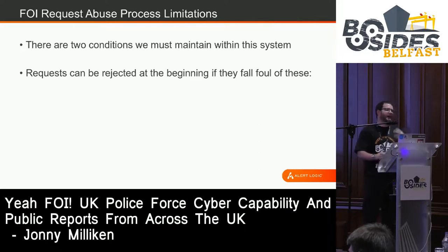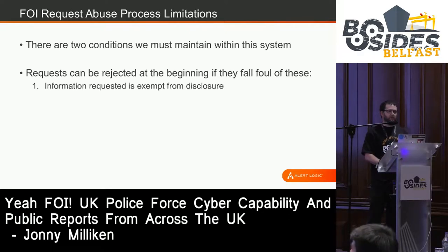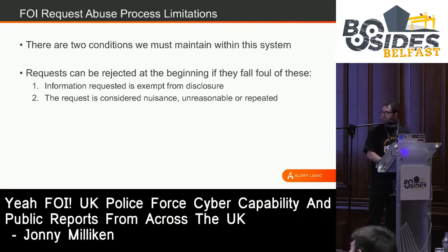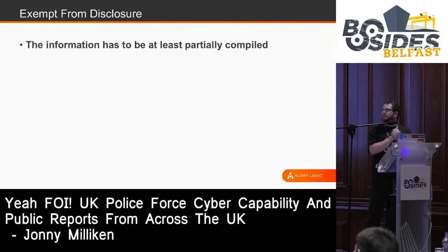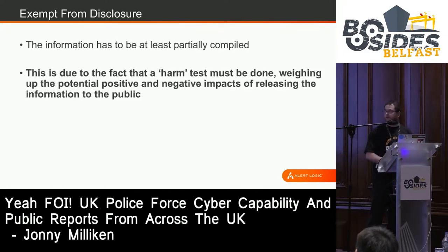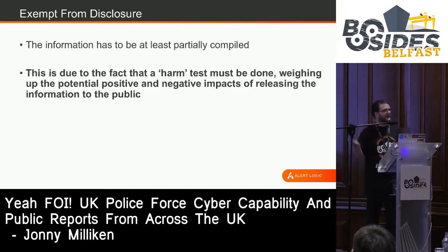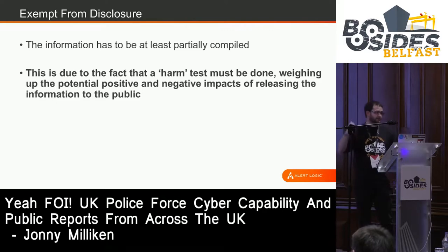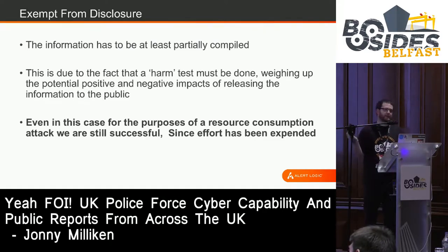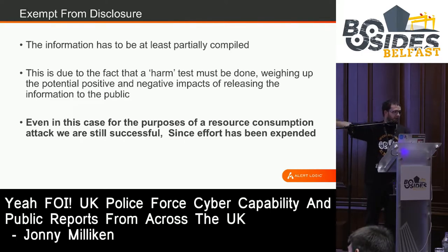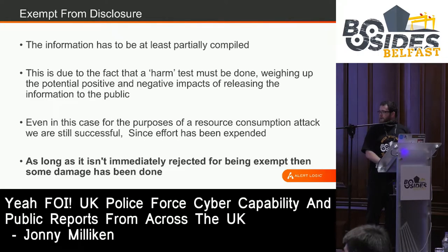There are two conditions under which a request must be rejected: either the information requested is exempt from disclosure, or the request is considered nuisance, unreasonable or repeated. For something to be exempt from disclosure, it has to be at least partially compiled — they actually have to gather the data to perform a harm test, weighing positives and negatives about disclosure. So even if ultimately rejected, some damage has been done. As long as it isn't immediately rejected as exempt, then some resources have been consumed — it might not be the maximum but it will be greater than zero. For the 'unreasonable' condition — exceeding 18 hours — they still have to do some assessment of the data to begin with, and you can segment requests down to per month to get around that limit.